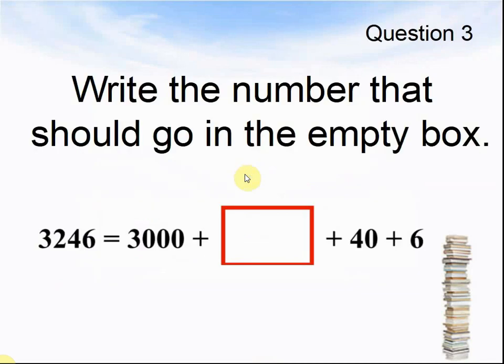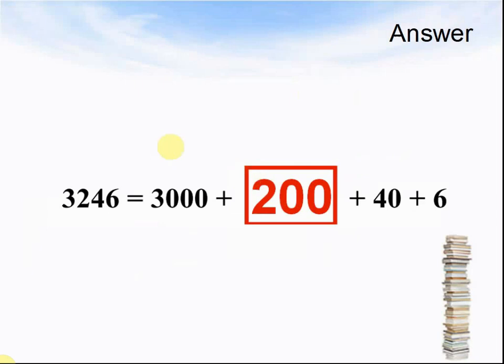Let's look at the next question. Question 3: write the number that should go in the empty box. 3246 equals 3000 plus something plus 40 plus 6. Pause the video until you are ready for the answer. Here comes the answer: 3246 equals 3000 plus 200 plus 40 plus 6.